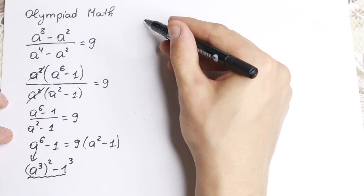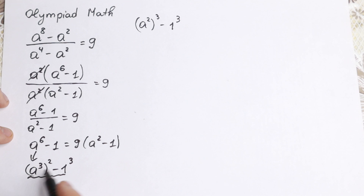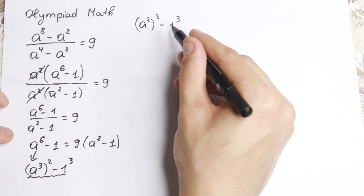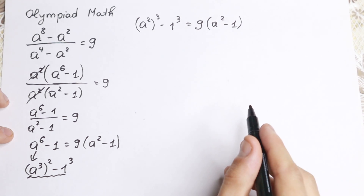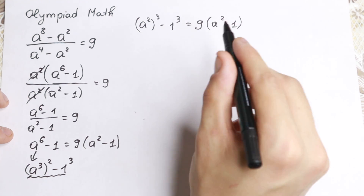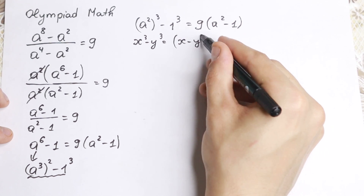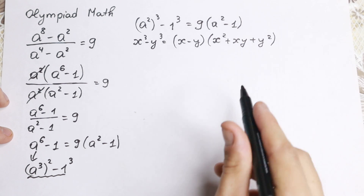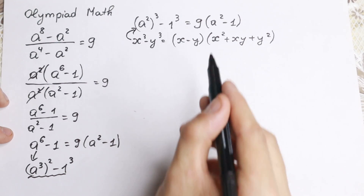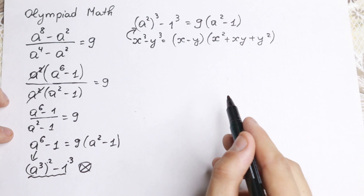I want to write it as a squared cubed minus 1 cubed, because right here we have the difference of cubes formula we can apply. The formula is: x cubed minus y cubed equals x minus y, times x squared plus xy plus y squared. We can easily apply this formula here. Setting x equal to a squared and y equal to 1, we apply the formula on the left-hand side and keep 9 times a squared minus 1 on the right.